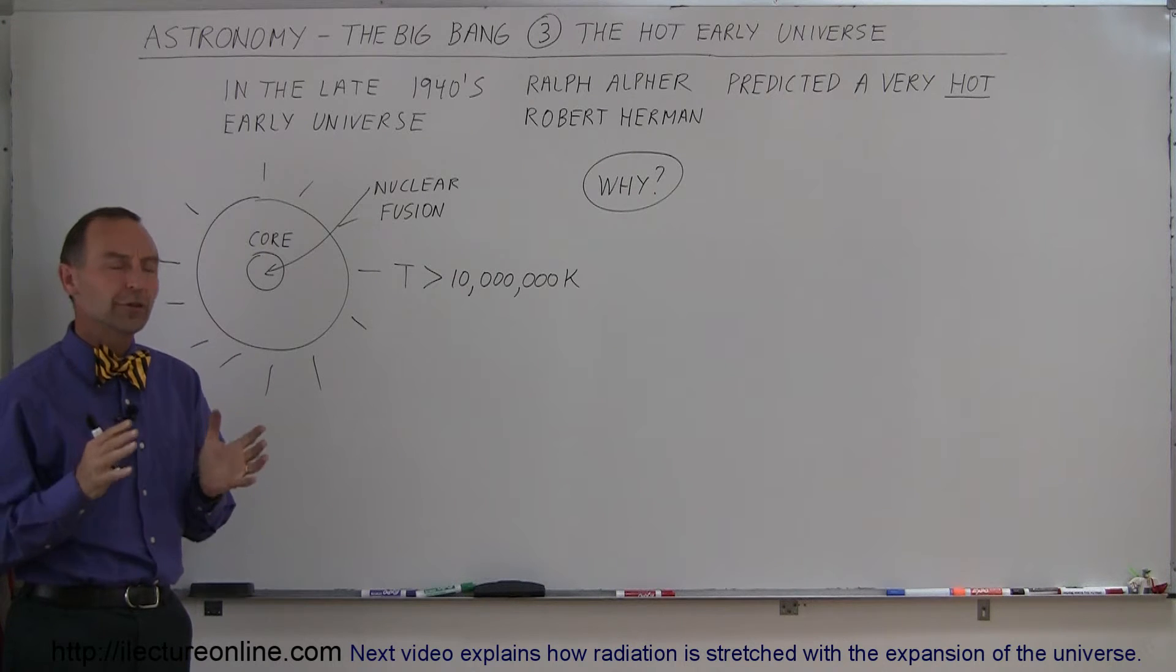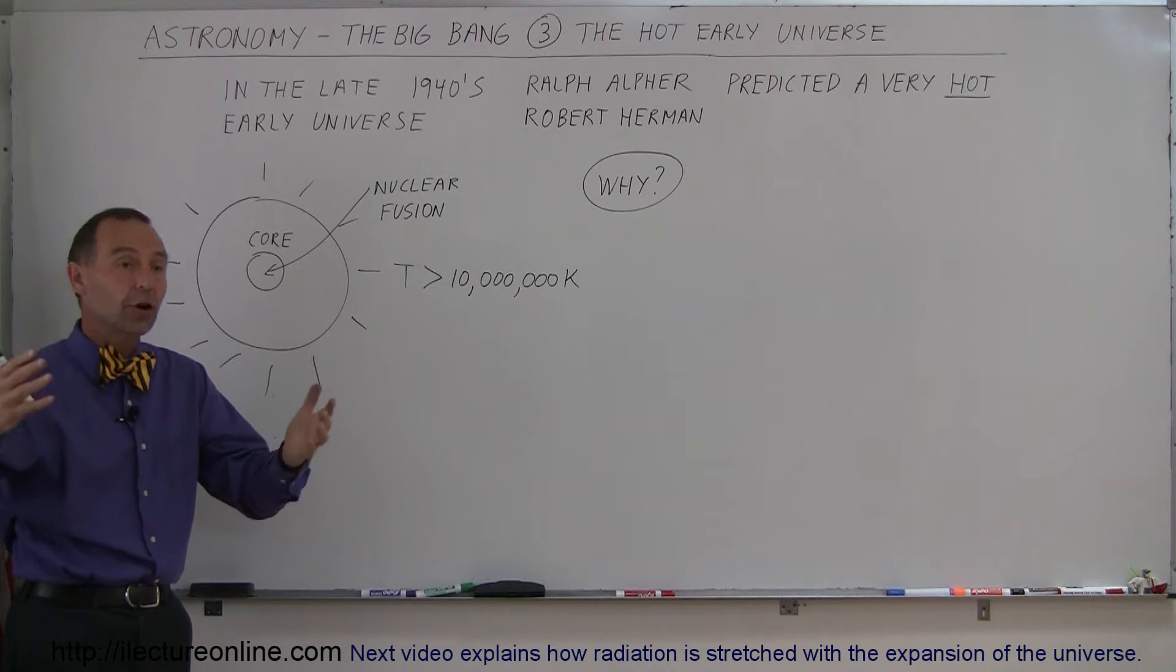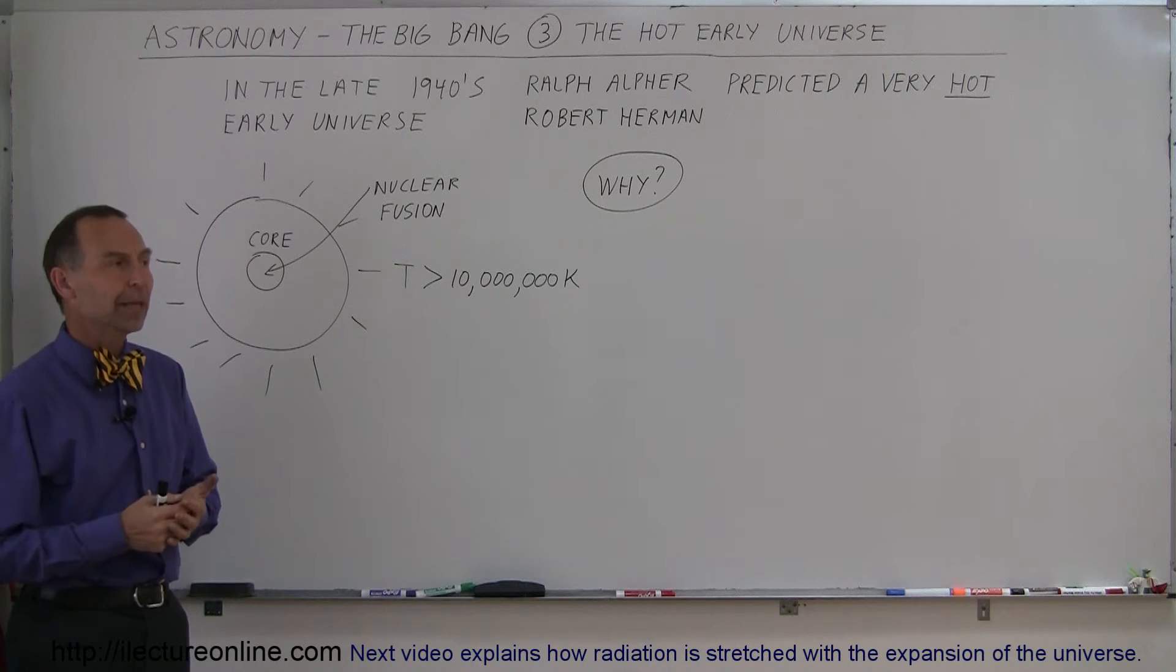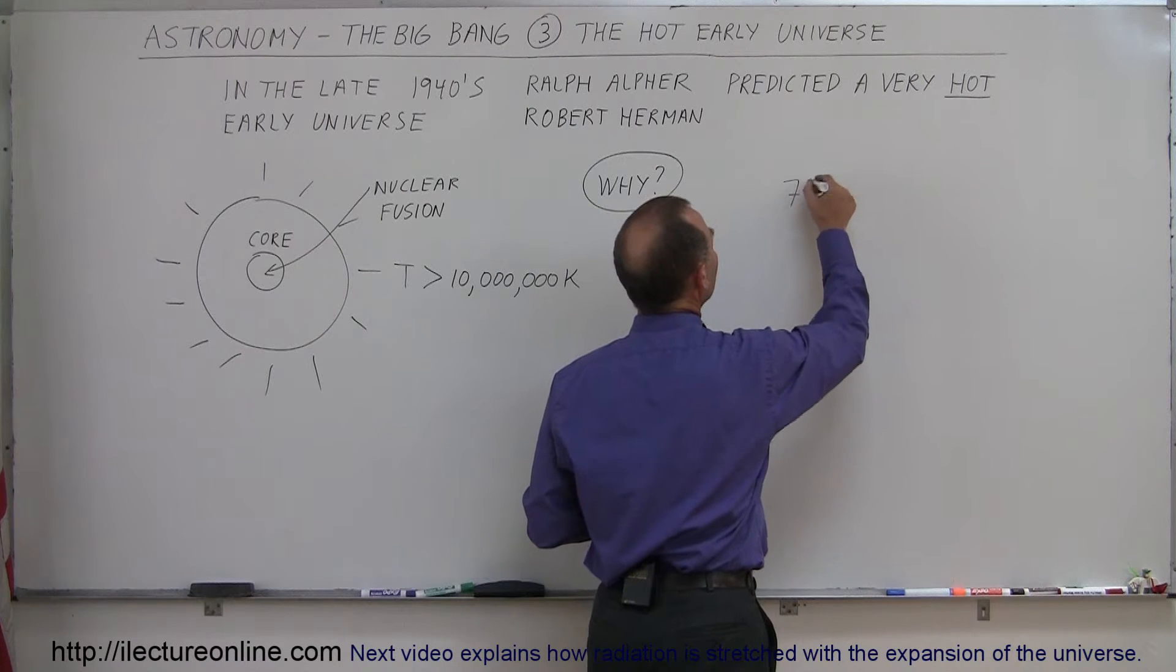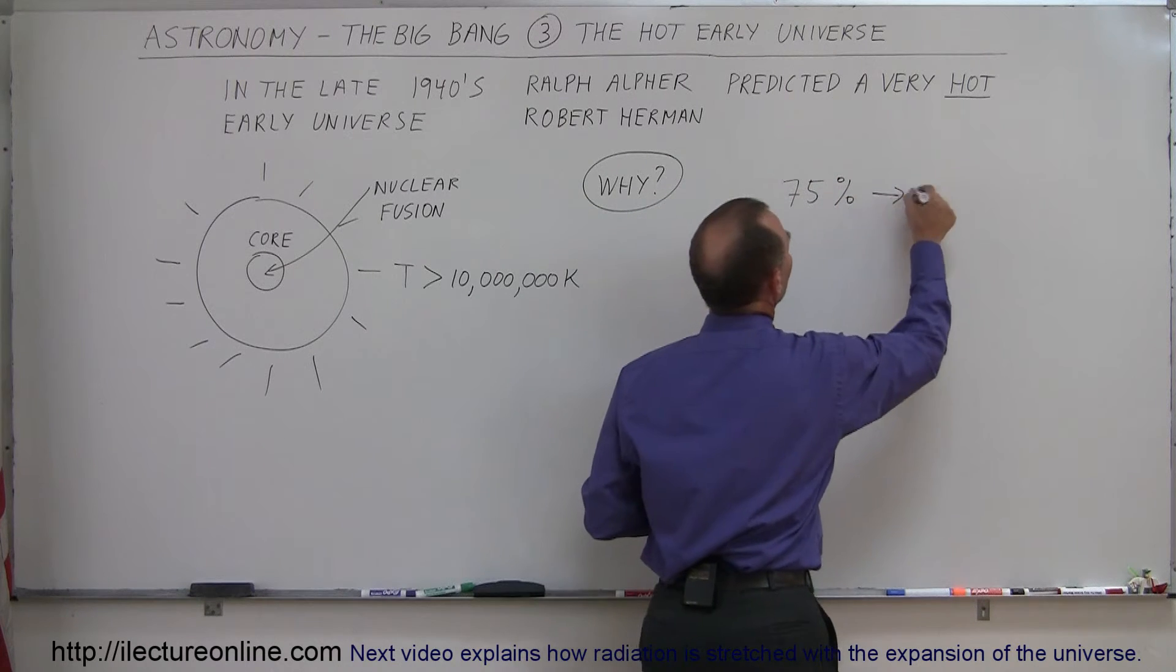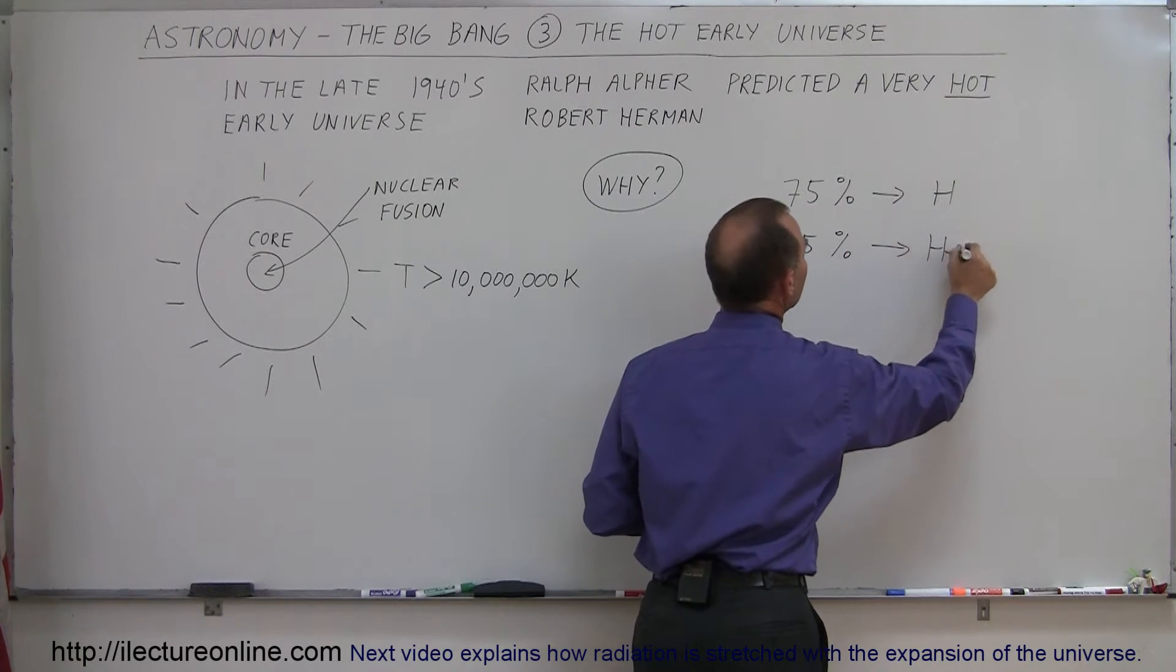They looked at the consistency of the universe and realized that by and large, if you look at all the stars and planets and everything out there, about 75 percent of the universe is made up of hydrogen, and the other 25 percent is made up of helium.